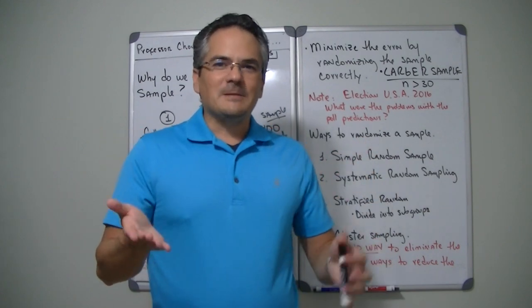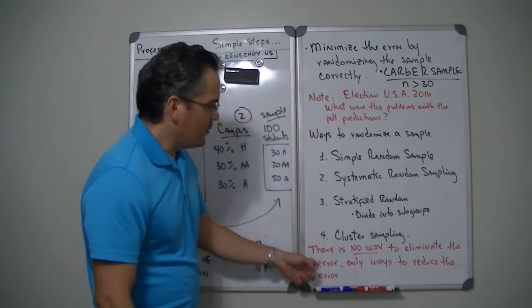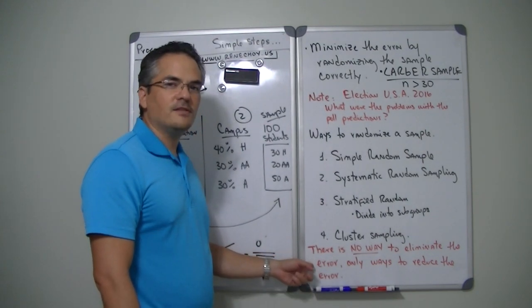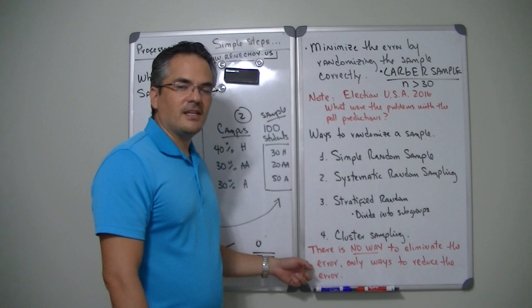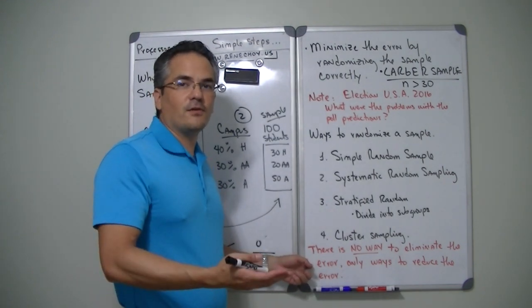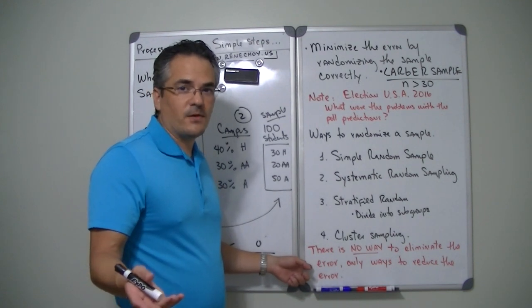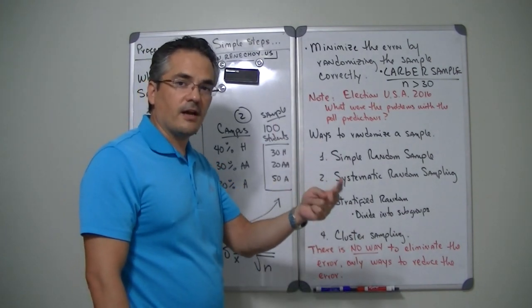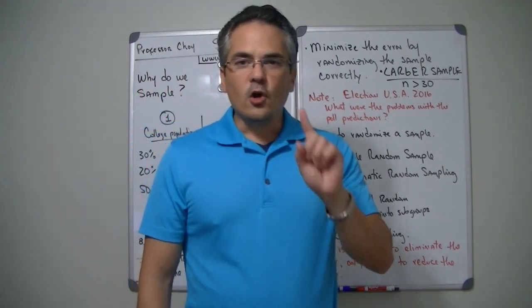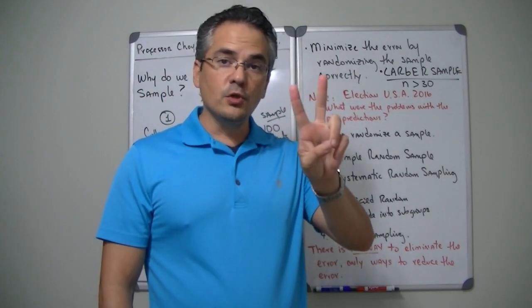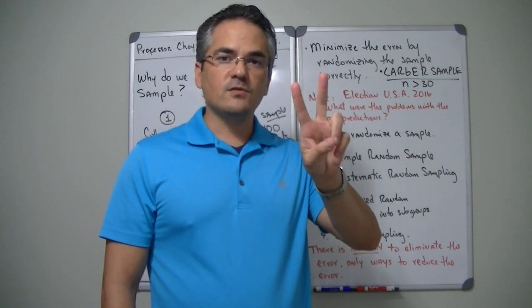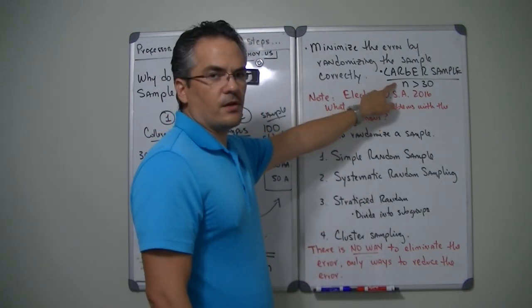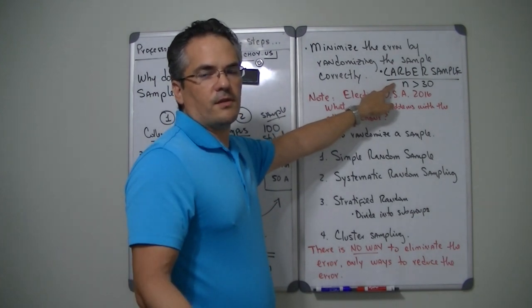You need to understand that every time you have a sample instead of a population, there is no way to eliminate that error — the only way is to reduce it. Samples have issues, population is very difficult, and welcome to statistics. The two basic ways to reduce error are: one, collect as much sample as possible, and two, randomize your sample the best way possible. A sample larger than 30 is the best way to go — or way more than 30 will be even better.